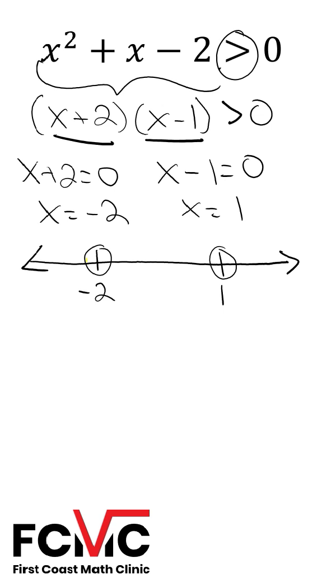We have three intervals now: values less than negative 2, values greater than negative 2 and less than 1, and values greater than 1. We want to pick values in each interval and test them in our factored inequality and figure out if they produce a true solution set.